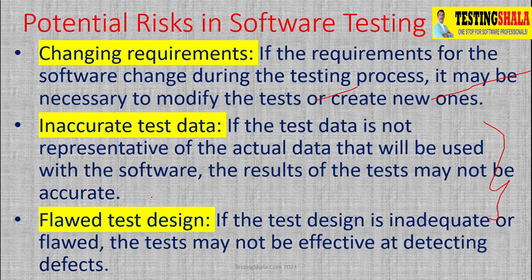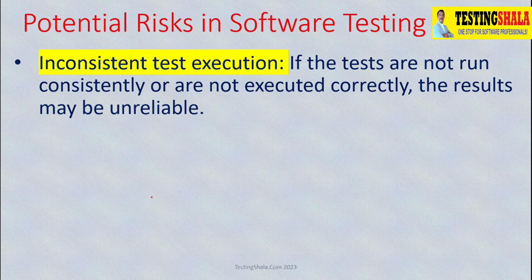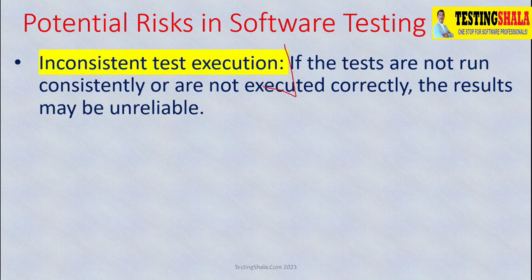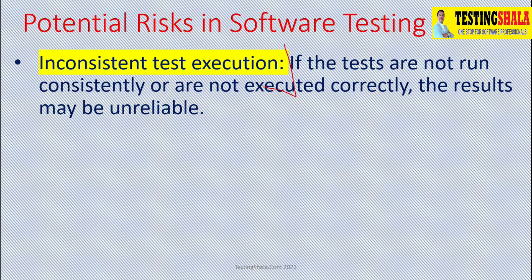You can mitigate this by considering the right set of resources and senior folks who can review all our test deliverables. The next type of risk is inconsistency in test execution. If you do not put the right plan, whatever plan we put is of no use. We have to consistently execute the test cases to meet the overall testing goal on time. We also have to keep a contingency in mind for sick leaves, vacations, or road blockers while testing.